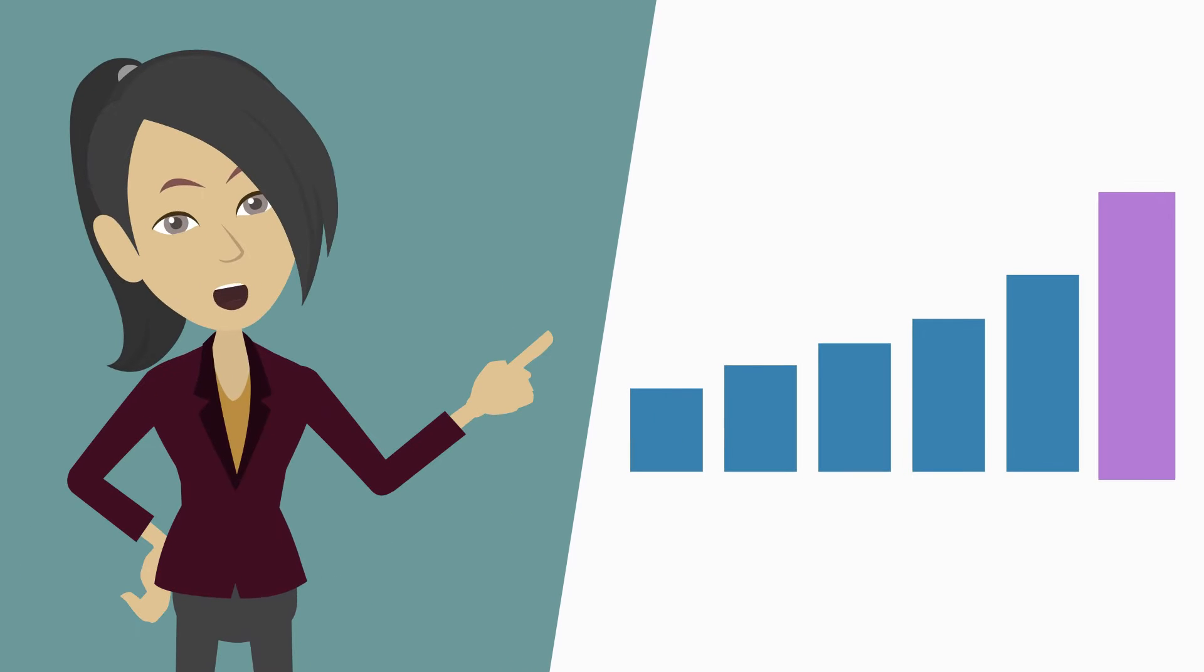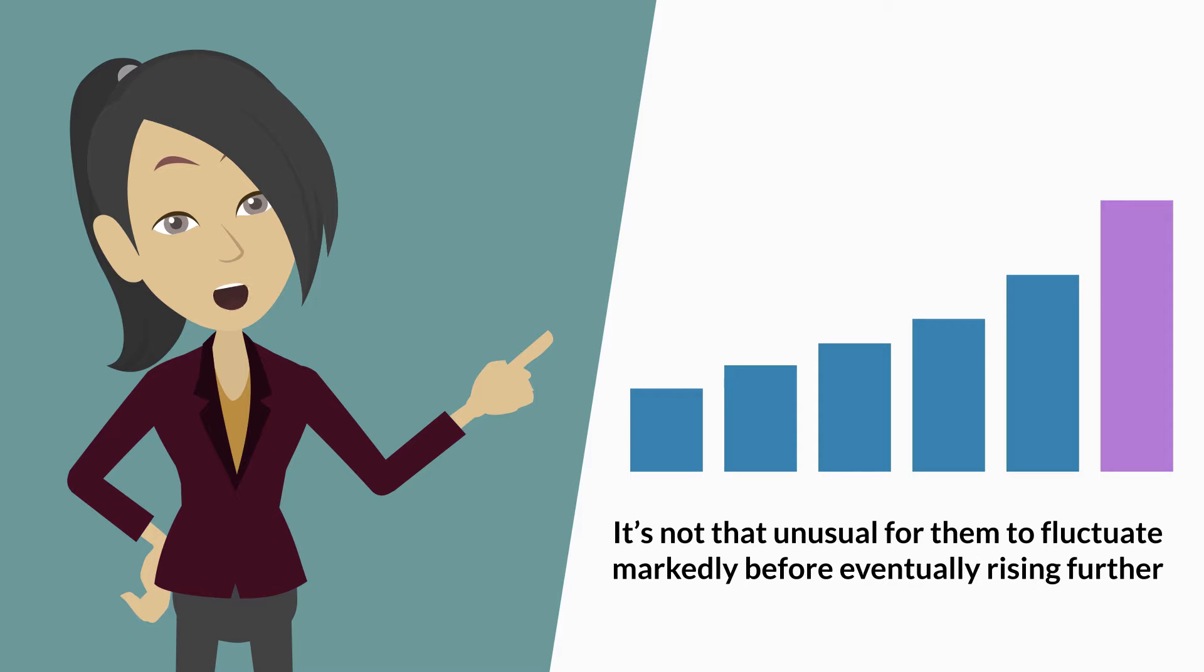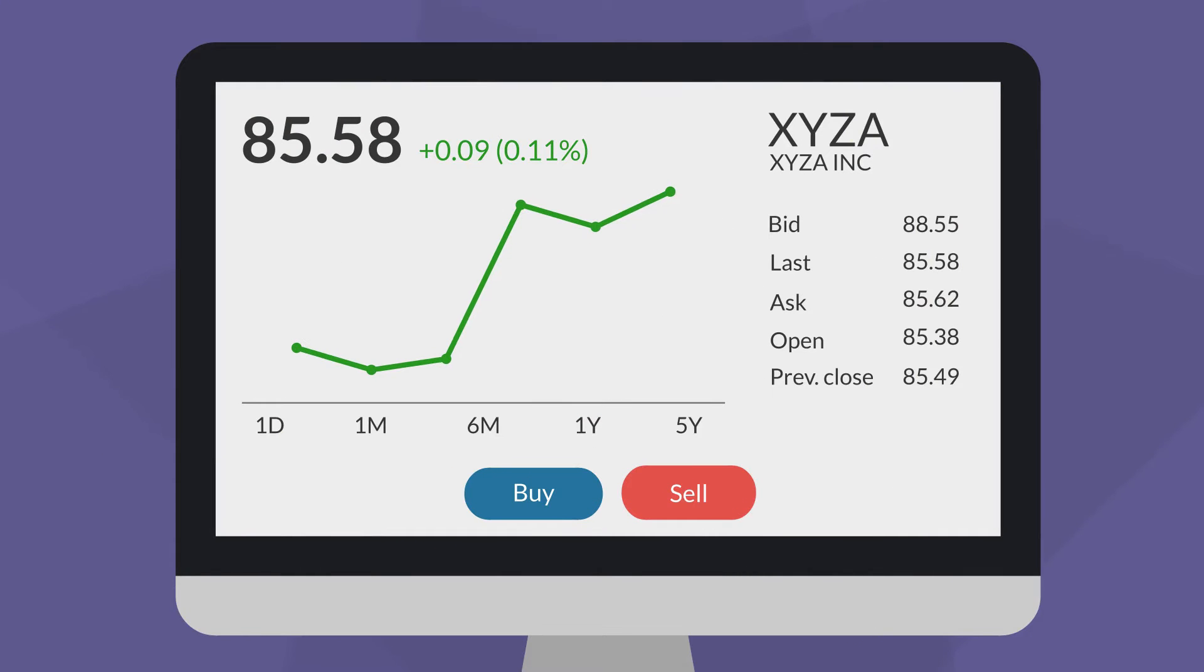However, many cryptocurrencies such as Bitcoin are coming off all-time highs, and it's not that unusual for them to fluctuate markedly before eventually rising further. Those who bought and held may still be sitting on some pretty nice gains, despite these ups and downs.